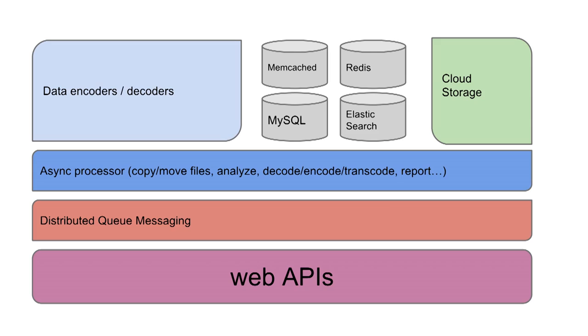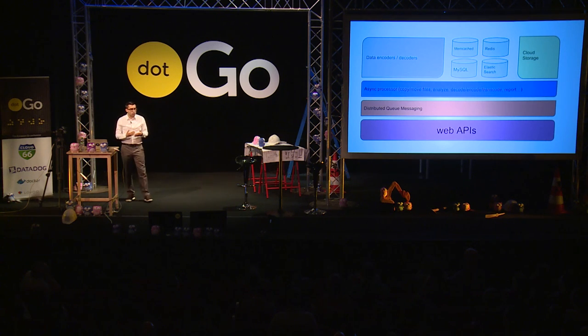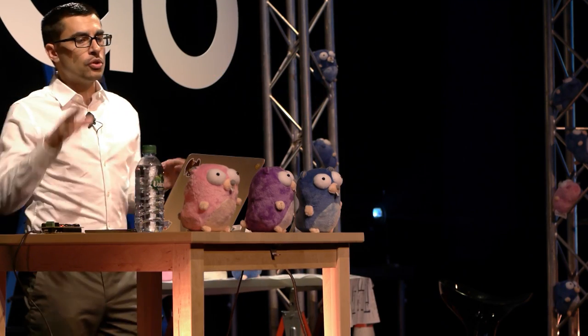This is a very high-level view of our stack. At the top we have web APIs and clients — desktop or web — talking to these web APIs. The handlers take the request, process it, and in a lot of cases push a message into a distributed queue running in the cloud. That queue then gets processed by processors running on servers, which take the files, decode them, transcode them, process them, create reports, and sort data into different places.